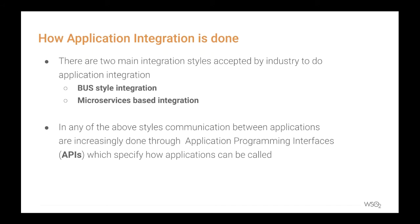When you do application integration, different parties — meaning different applications — need to communicate with each other. They need to agree on a common protocol and a common message format. This agreement on how to communicate we can call an API. If the communication is done over HTTP, we can use a REST API, but any defined agreement on how to call the functionalities of an application can be considered an API.